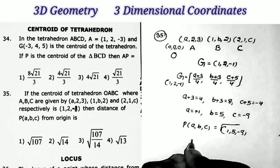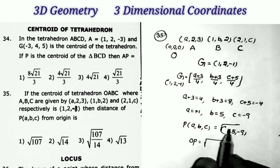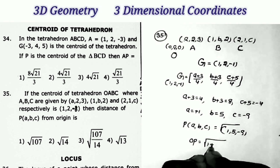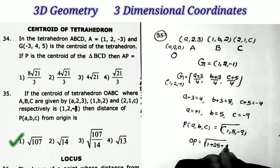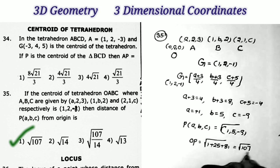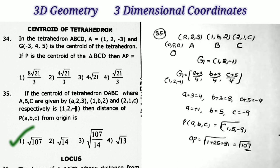The distance OP = √(a² + b² + c²) = √(1 + 25 + 81) = √107. That is all, and that is the first option.